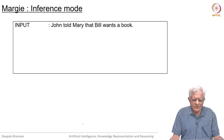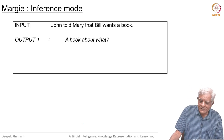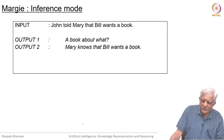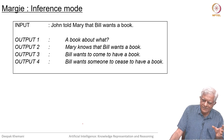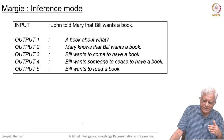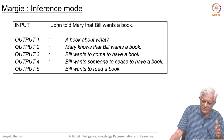Here is an example: John hit Mary. John told Mary that Bill wants a book. Marji produced these different outputs — for example: a book about what; Mary knows that Bill wants a book; Bill wants to come to have a book; Bill wants someone to cease to have a book; Bill wants to read a book.